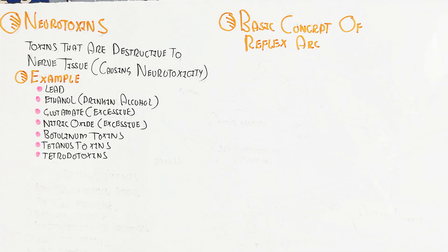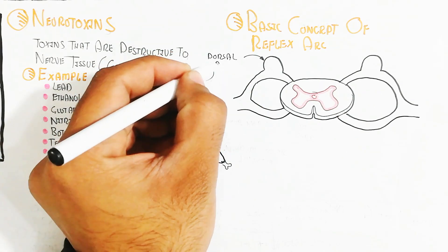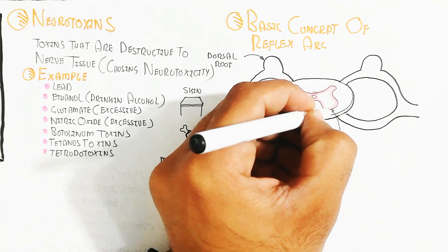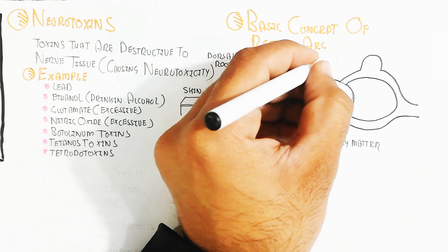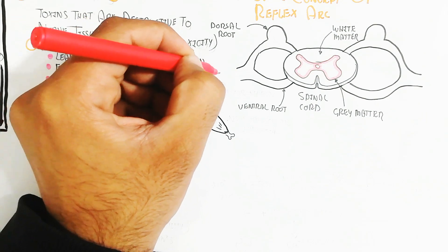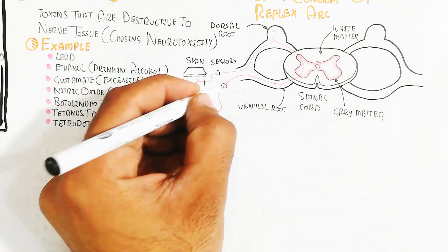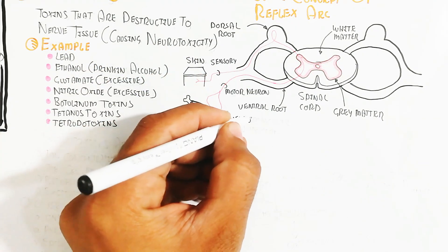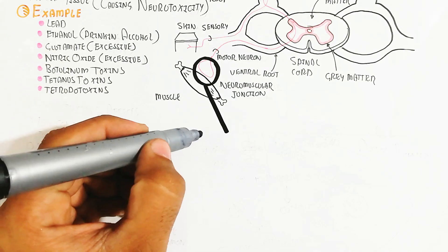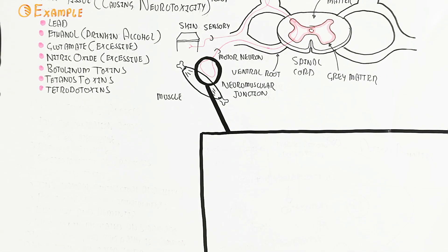The ion distribution across the cell membrane must be maintained normally; when disturbed, it leads to nerve impulse. For the reflex arc: the skin acts as the sensory input. The sensory neuron transmits the signal from the skin to the dorsal root ganglion. The interneuron integrates the signal, and the motor neuron sends the signal to the muscle via the neuromuscular junction, causing the muscle to contract.